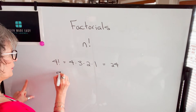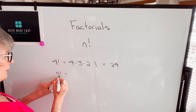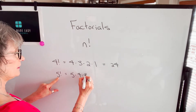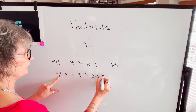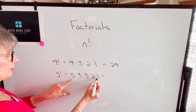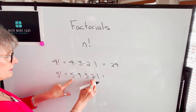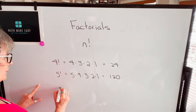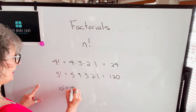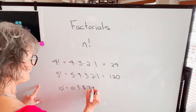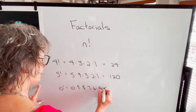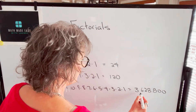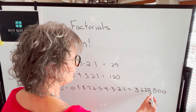If we looked at 5 factorial, it would start with 5, and then we'd multiply by the next lowest number, which is 4, then 3, then 2, then 1. When we multiply all of this out, 20 times 3 is 60, times 2 is 120. 10 factorial will be 10 times 9 times 8 times 7 times 6 times 5 times 4 times 3 times 2 times 1, and that's equal to 3,628,800.